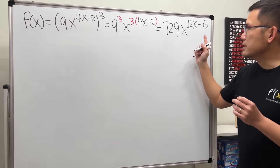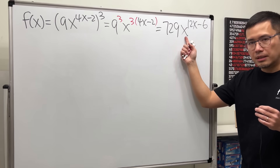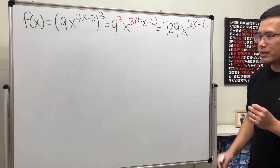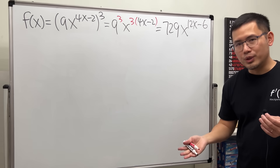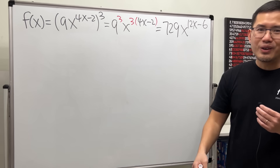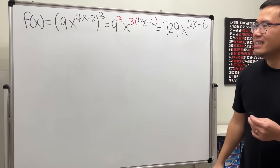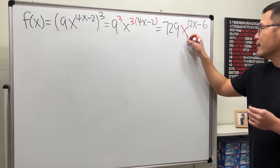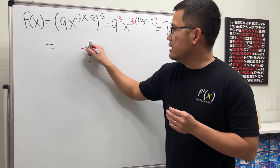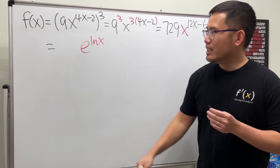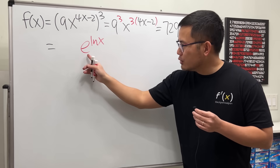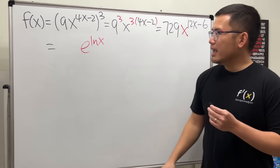Our f(x) is 729 · x^(12x − 6). Be careful — x is in the base and also in the power, so do not bring the power to the front and subtract 1. Instead, the key trick is that we rewrite x as e to the ln x power. We purposely do this because we want e as the base, and e and ln cancel each other out.